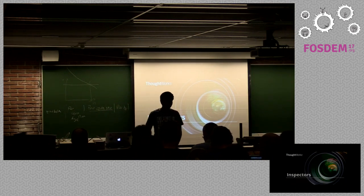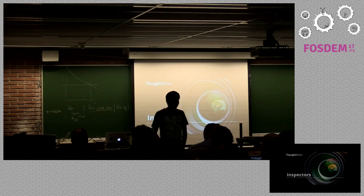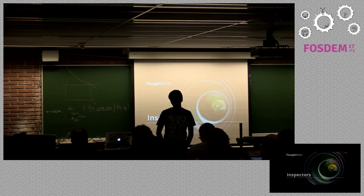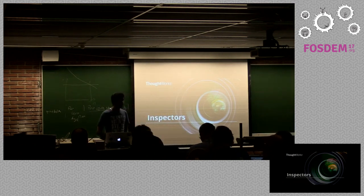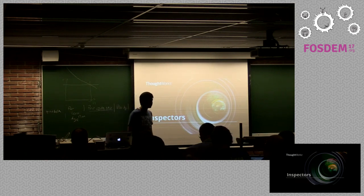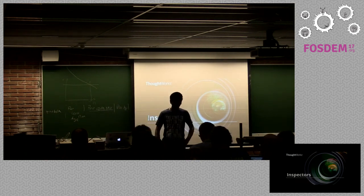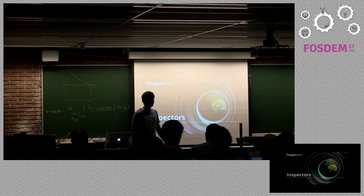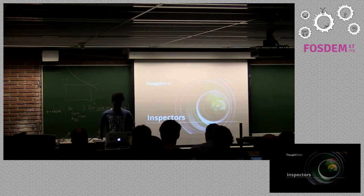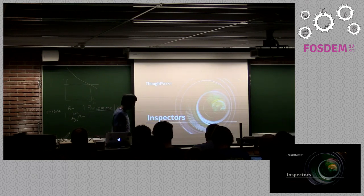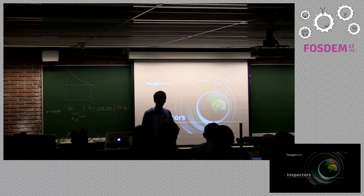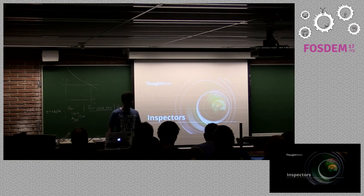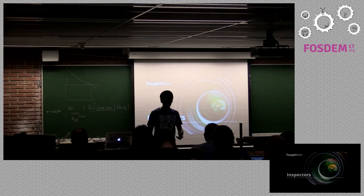There are a lot of mobile inspectors currently in market. We have one from Google which is UI Automator Viewer, used to inspect mobile apps to get the hierarchy and find IDs or any properties of mobile elements. From Facebook, we have a tool called WebDriver Inspector — developed by a group of Facebook engineers.